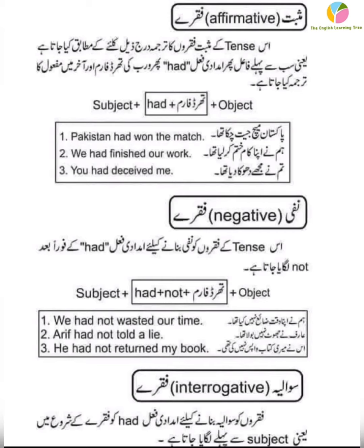Now let's move towards negative sentences of the past perfect tense. To make sentences negative, 'not' is used right after the helping verb 'had'. So the structure is: subject, then 'had', then 'not' for negative, then the third form of the verb. For example: We had not wasted our time. Here, 'we' is the subject, 'had' is the helping verb, 'not' is for the negative, 'wasted' is the third form of the verb, and 'time' is the object at the end.